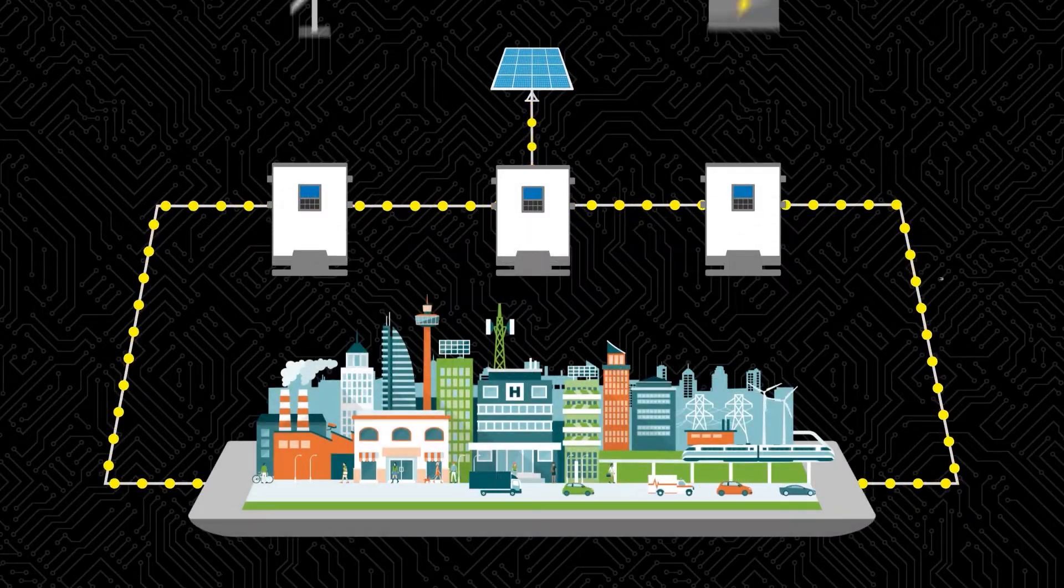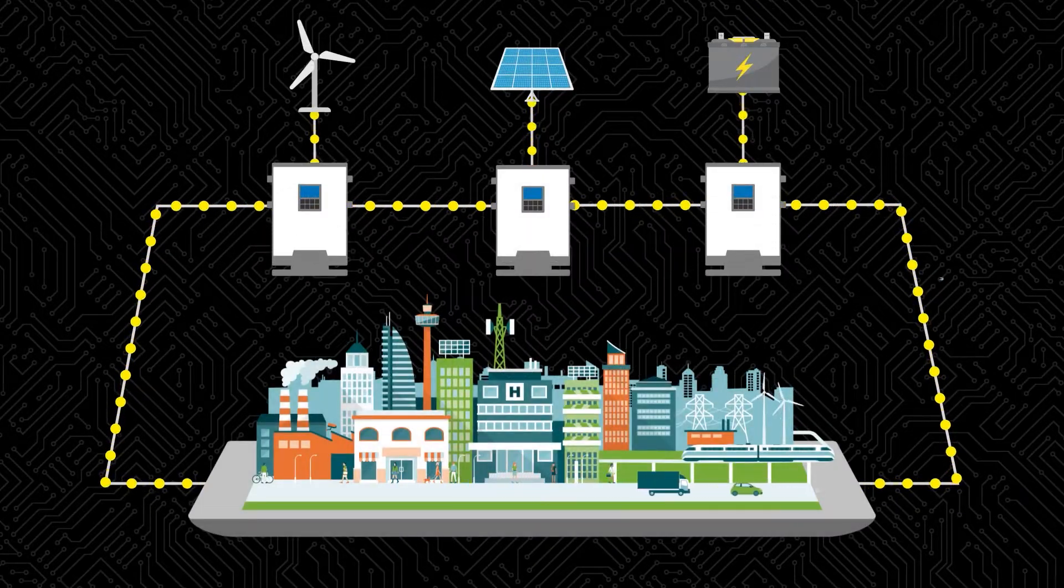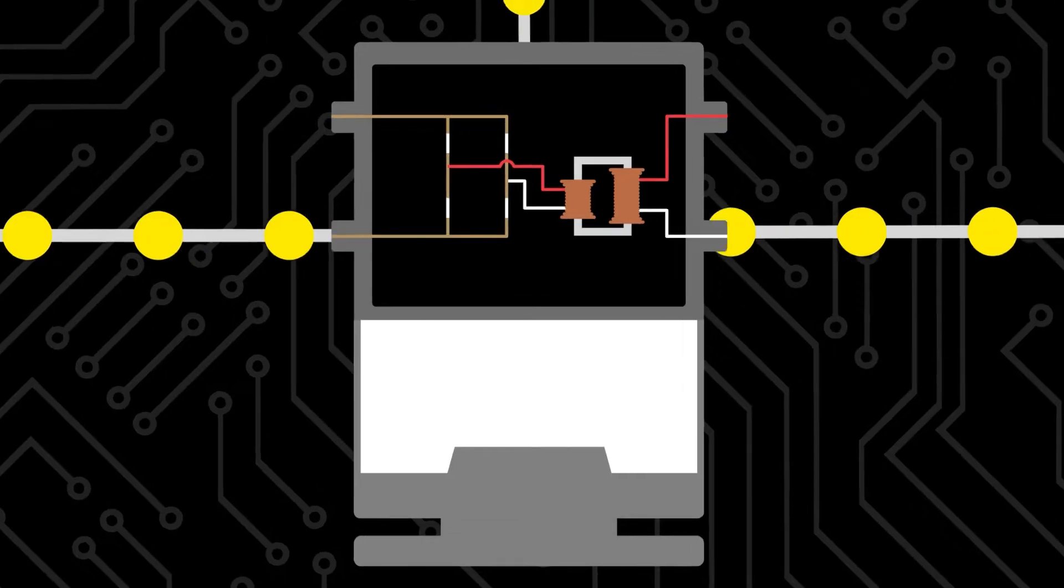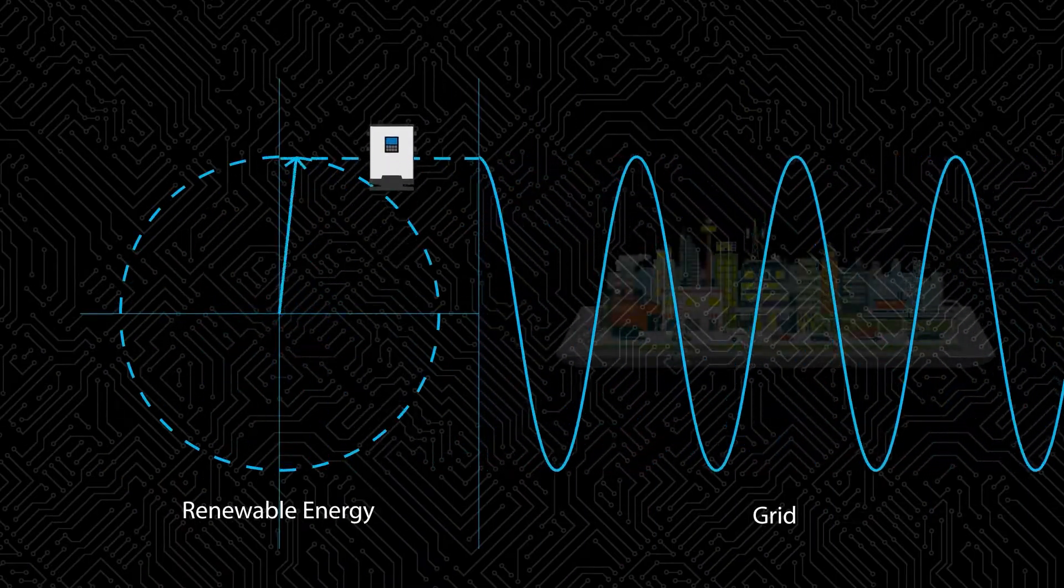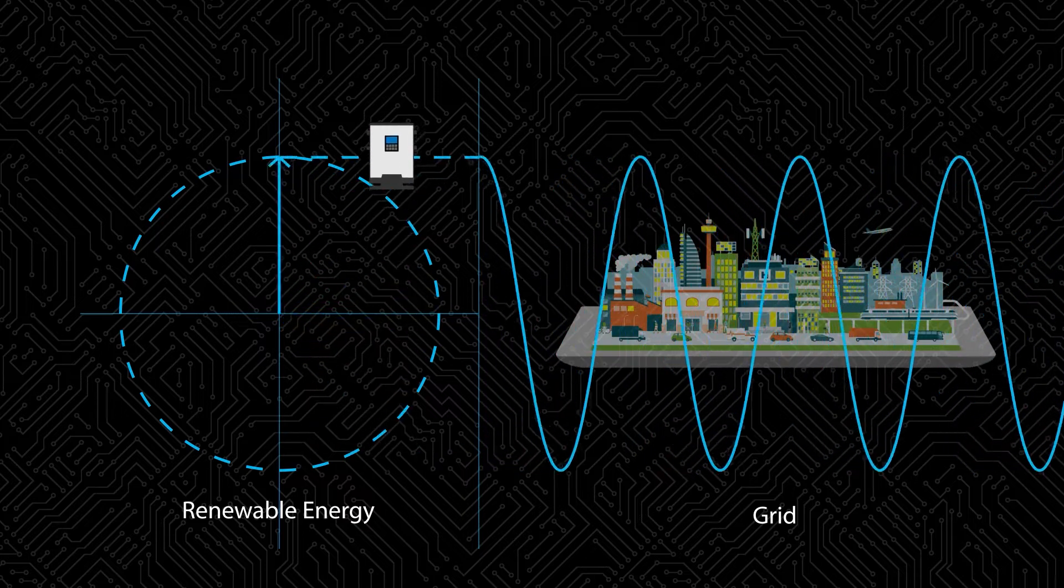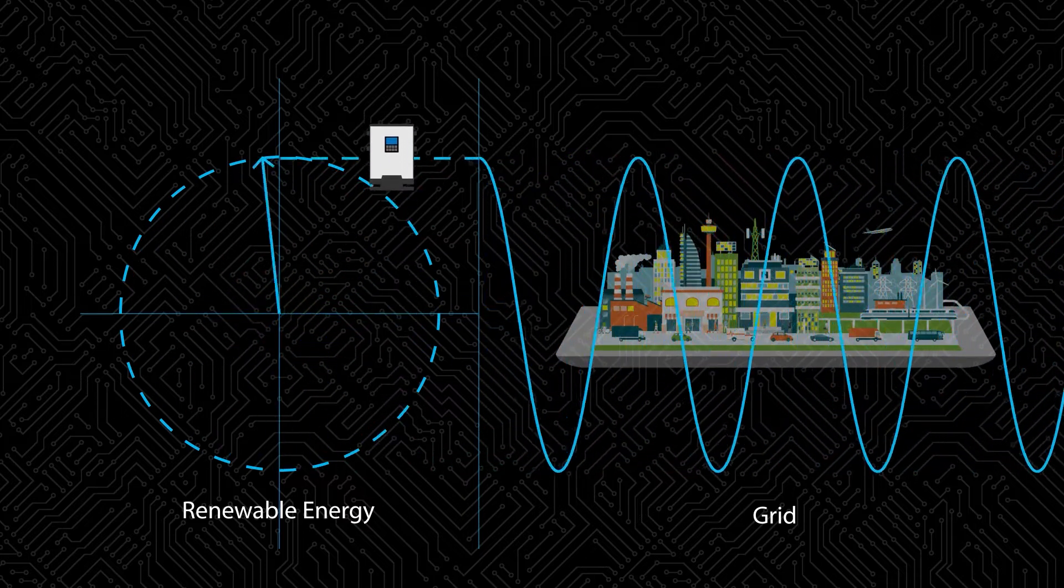They have an important role to play in providing grid stability. It all depends on their controls. When inverters inject electricity into the grid, it must match the grid's existing voltage and frequency.